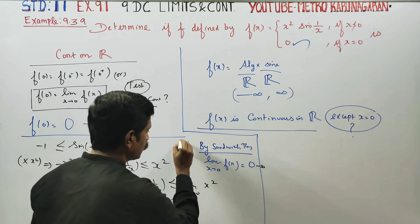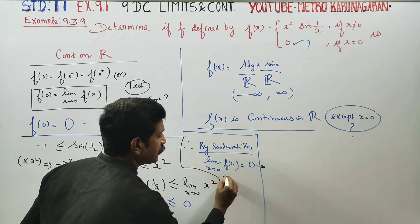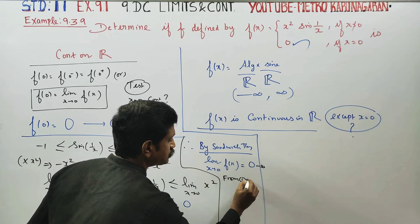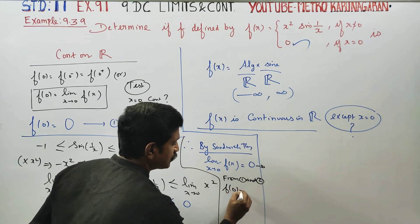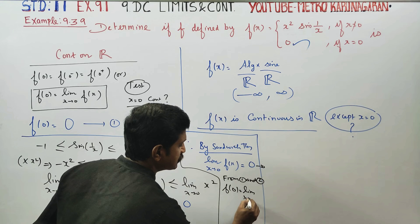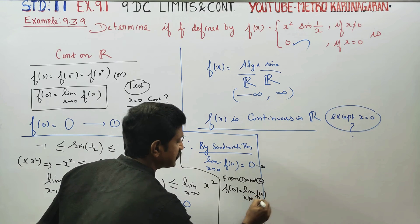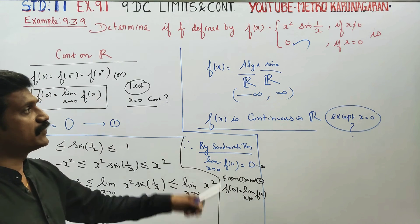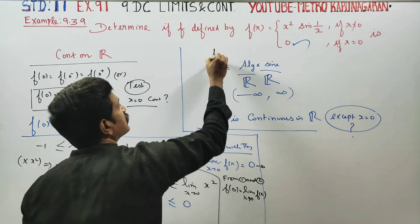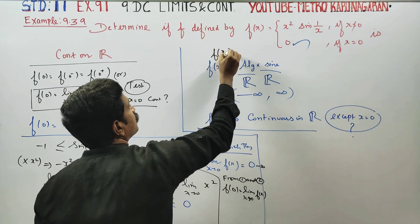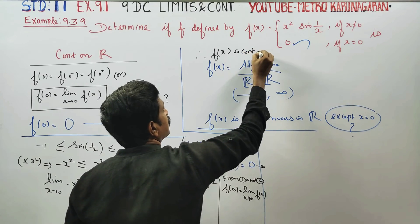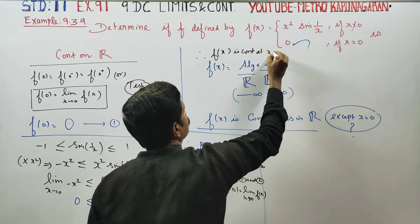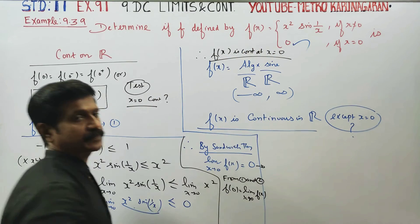From Result 1 and Result 2, f(0) is equal to limit x→0 of f(x), which equals 0. Therefore, f(x) is continuous at x equal to 0.